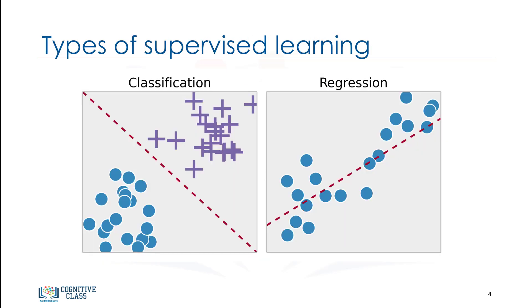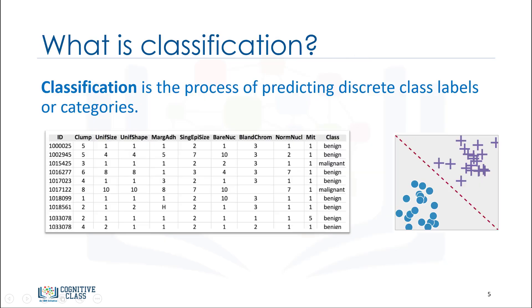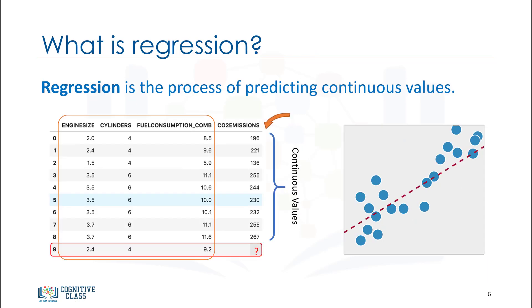There are two types of supervised learning techniques. They are classification and regression. Classification is the process of predicting a discrete class label or category. Regression is the process of predicting a continuous value as opposed to predicting a categorical value in classification.